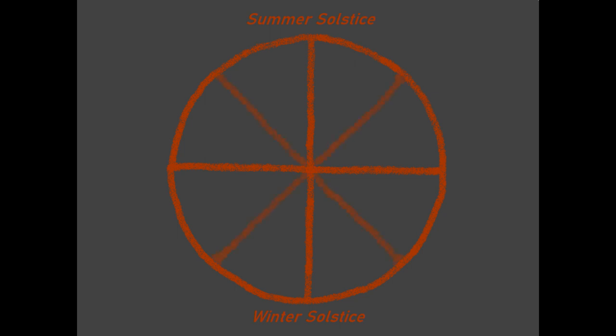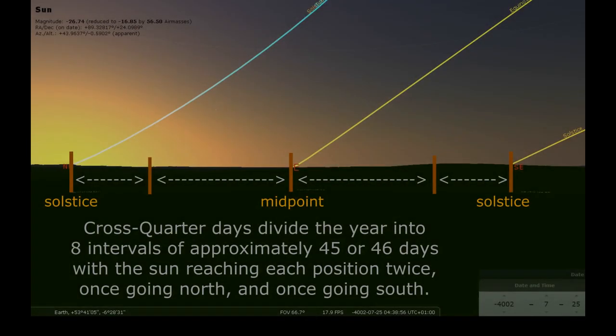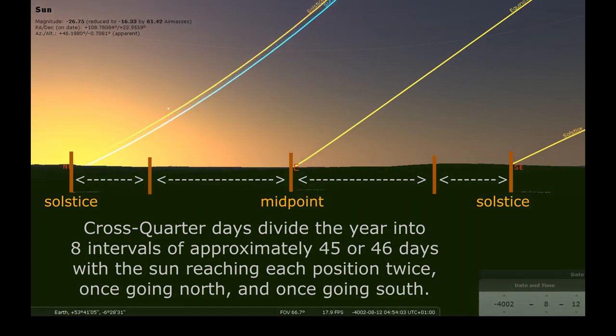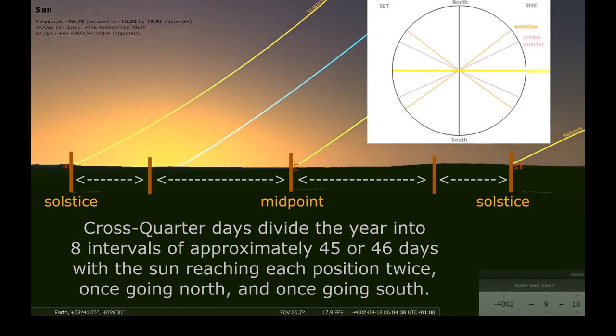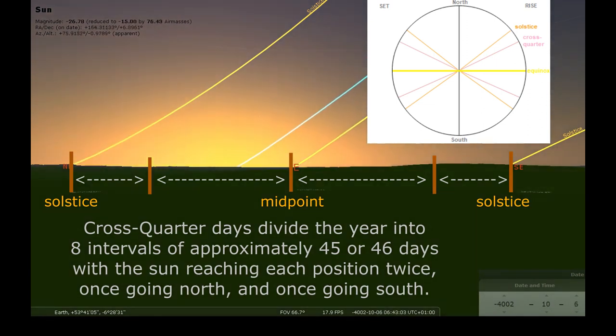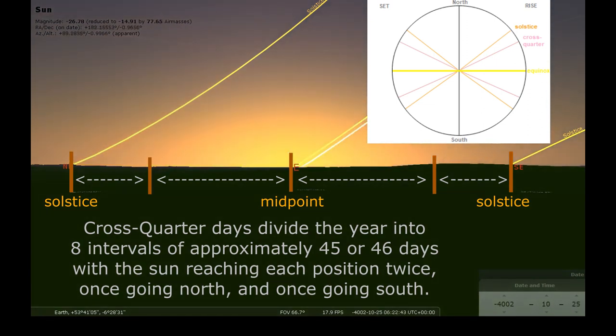Further divisions of the quarters of the year into eighths produce dates often called cross-quarter days. These dates, if marked by the Sun on the horizon, are closer to the solstice points than the midpoint, because the changes in sunrise and sunset positions is faster toward the center, and slows down toward either end.